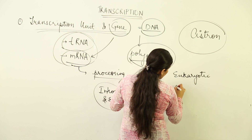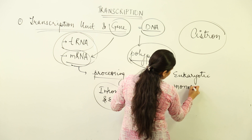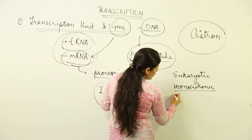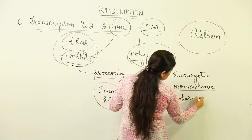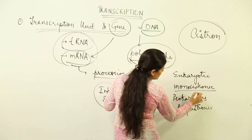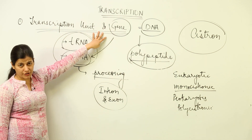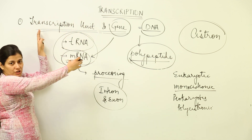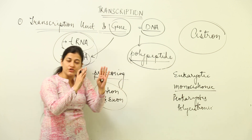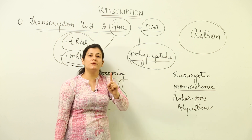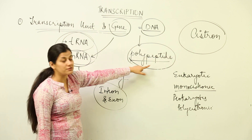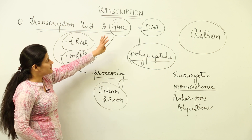Prokaryotes have polycistronic DNA. That means the structural gene flanked between promoter and terminator — that is, a transcription unit — will form more than one polypeptide. But in the case of eukaryotes, a transcription unit gives rise to a single polypeptide. This is what monocistronic and polycistronic means, and cistron is that part of DNA which gives rise to a polypeptide.